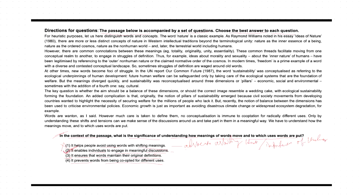Option three states that it ensures that words maintain their original definitions. This option is also wrong because the passage does not suggest that maintaining the original definition of words is the primary objective. In fact, the passage discusses how words can evolve and acquire new meanings over time. So maintaining their original definition is not the central point. The focus is on understanding and navigating the changing landscape of word meanings. Therefore, option three is wrong and eliminated.